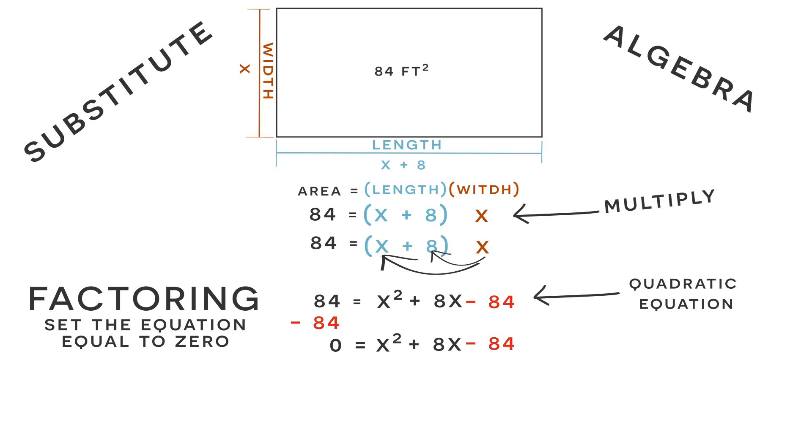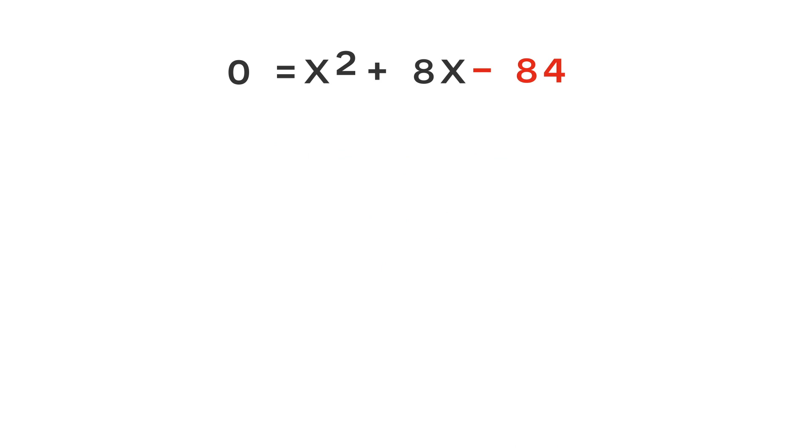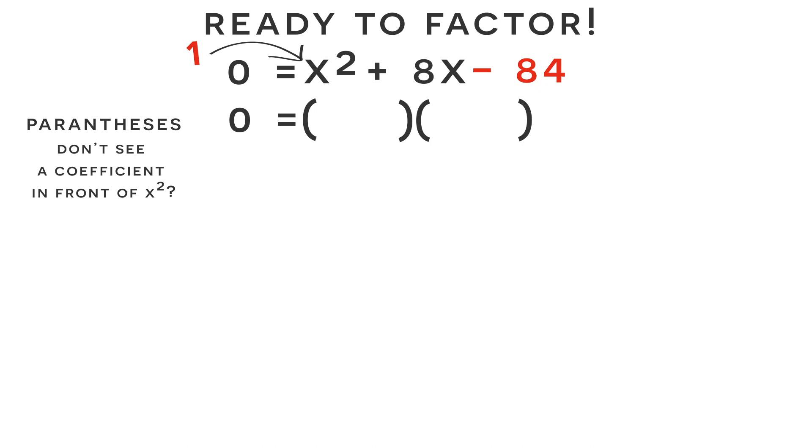So now at this point we have set our equation equal to zero and we are ready to factor. And the first thing I always do when factoring is create two parentheses. Now notice in front of the x squared term you do not see a coefficient. There actually is a coefficient, even though you don't see it, there's an implied one because one times x squared is just x squared. But anytime you do not see a coefficient in front of the x squared term, this means that the first two terms on the left side of each parentheses is going to be an x. This is because x times x is going to give us our x squared term.